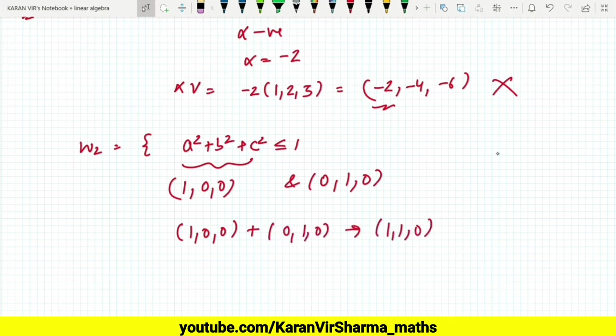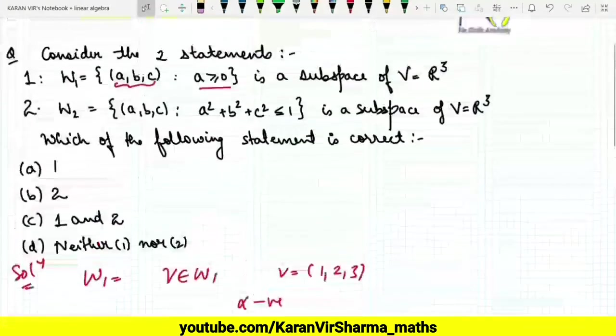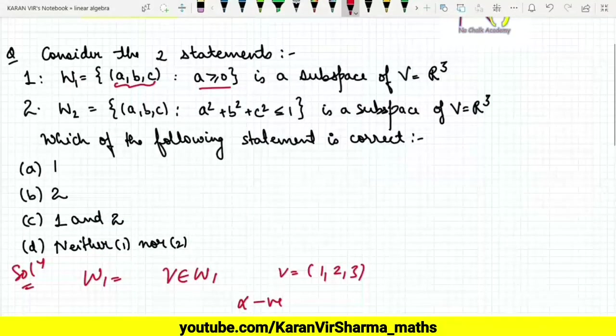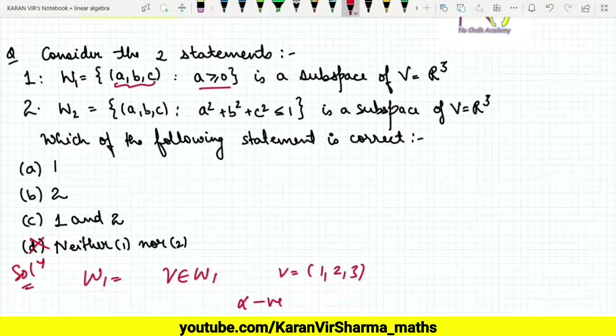Now just substitute these values: a² + b² + c² < 1, that is 1² + 1² + 0² < 1. Never! 2 is never less than 1. So again, this is not a vector subspace. So neither 1 nor 2 is a vector subspace, so answer D is correct.